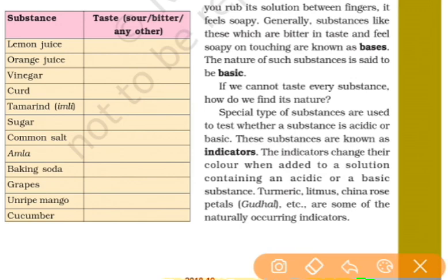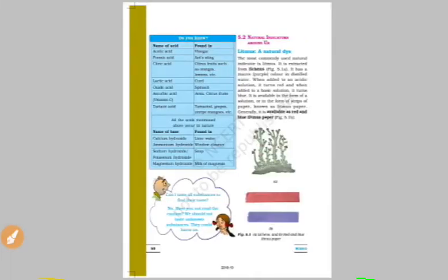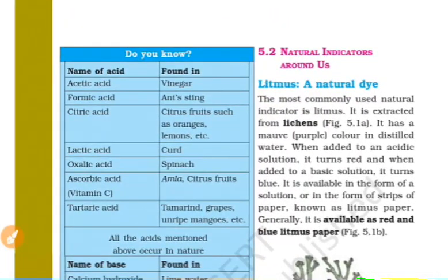The next term is indicator. What is an indicator? When a solution is acid or base, we use an indicator to determine whether it is acid or base. That is the indicator.